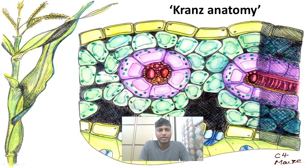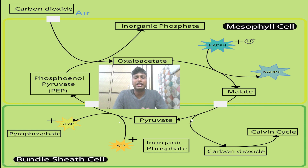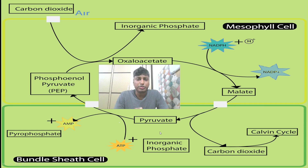Once malate is formed in the outer mesophyll cells, it is transferred into the inner bundle sheath cells. In the bundle sheath cells, malate gets converted into a 3-carbon compound — pyruvate — in a simple decarboxylation reaction. That means one carbon is lost from malate in the form of carbon dioxide. This is a very important step in the C4 pathway because the carbon dioxide released here enters the Calvin cycle, which is nothing but the C3 pathway.